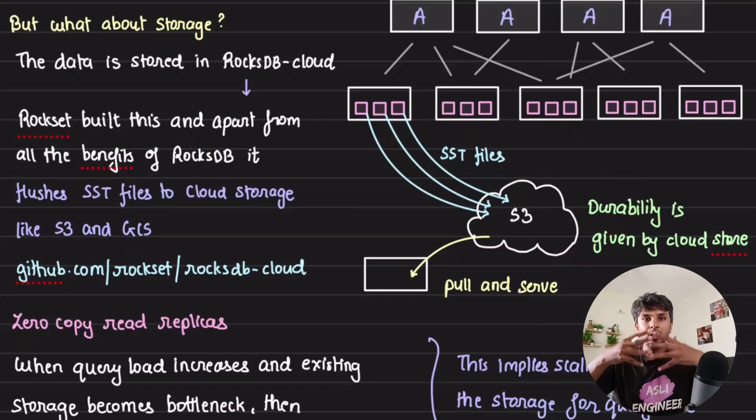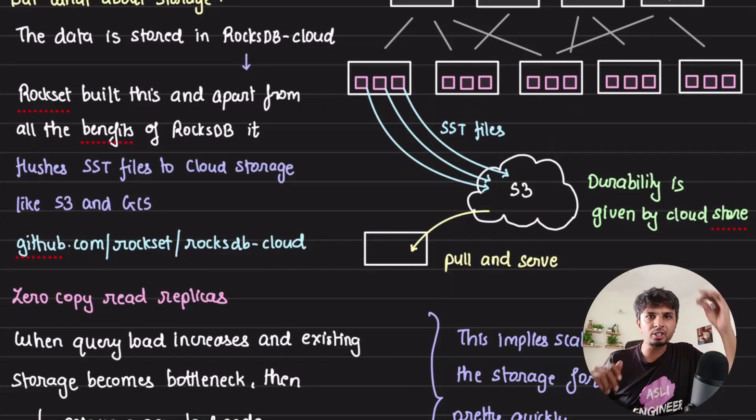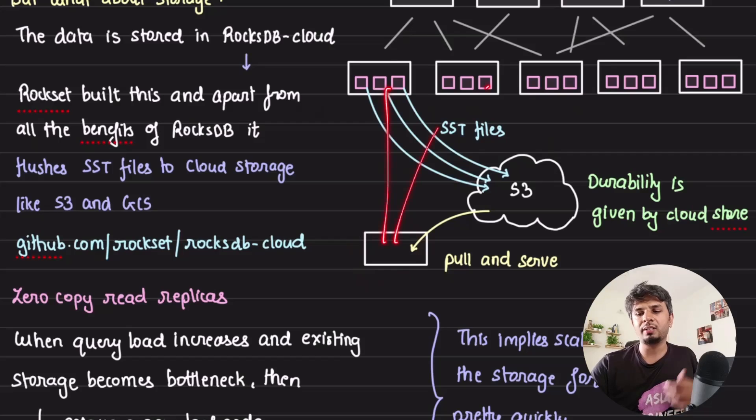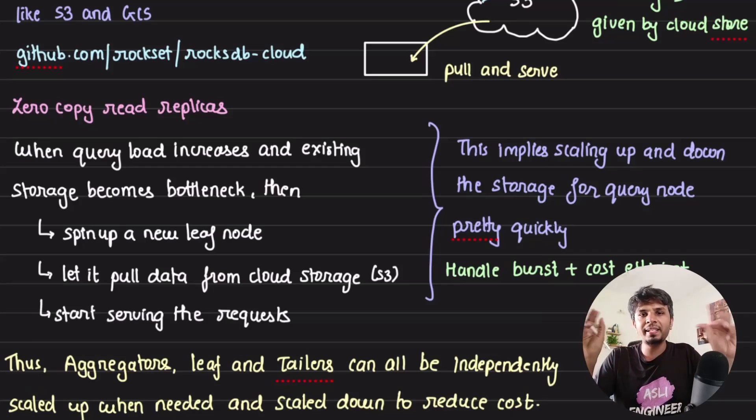Now what they do is, because all the files or all the SST files are actually on S3, what they can do is if there is a shortage of leaf nodes or leaf nodes are becoming a bottleneck, they spin up a leaf node, ask it to download the relevant SST files, and then it can start serving the request. That simple. That's the beauty of this. This is basically zero-copy read replica.